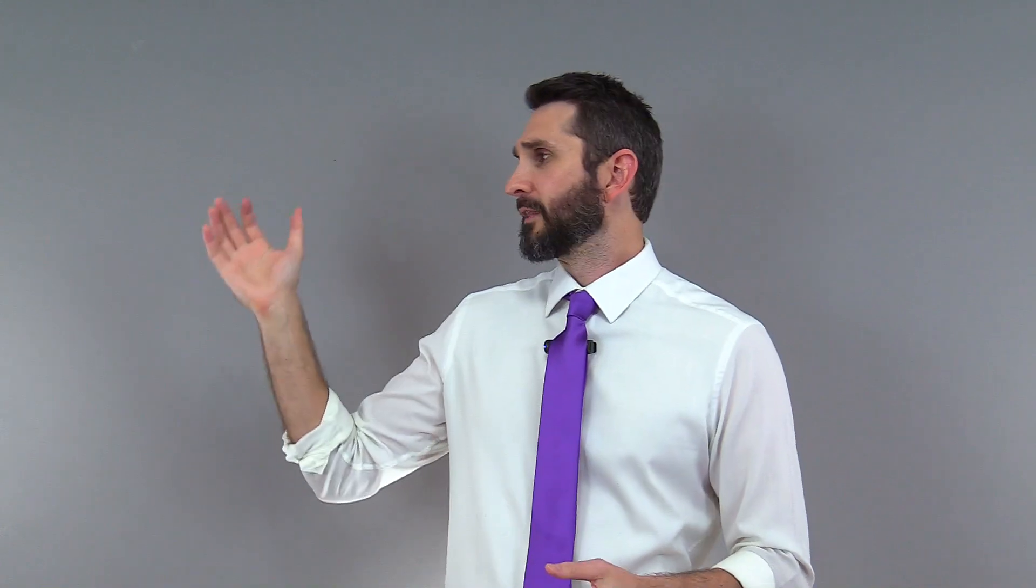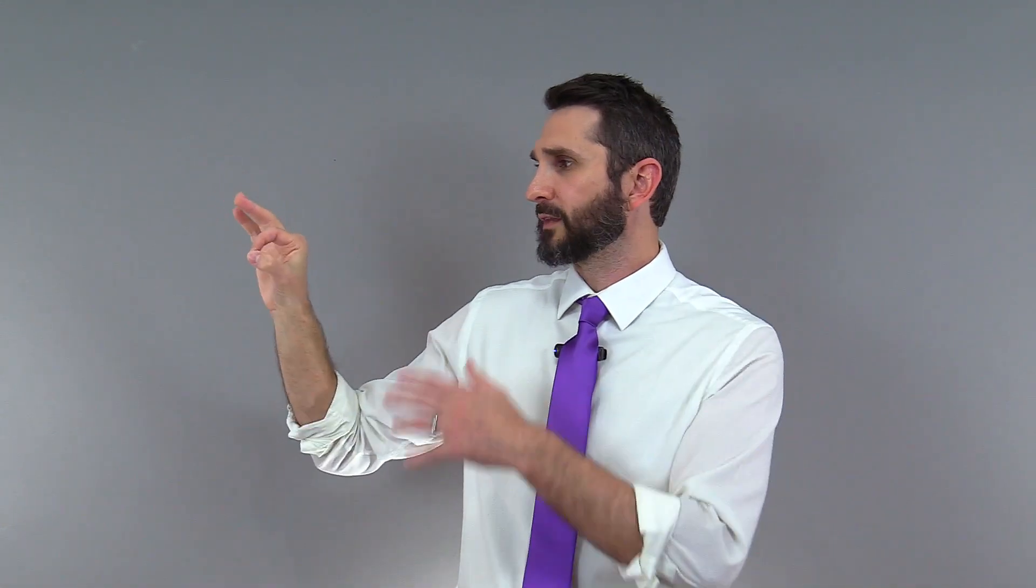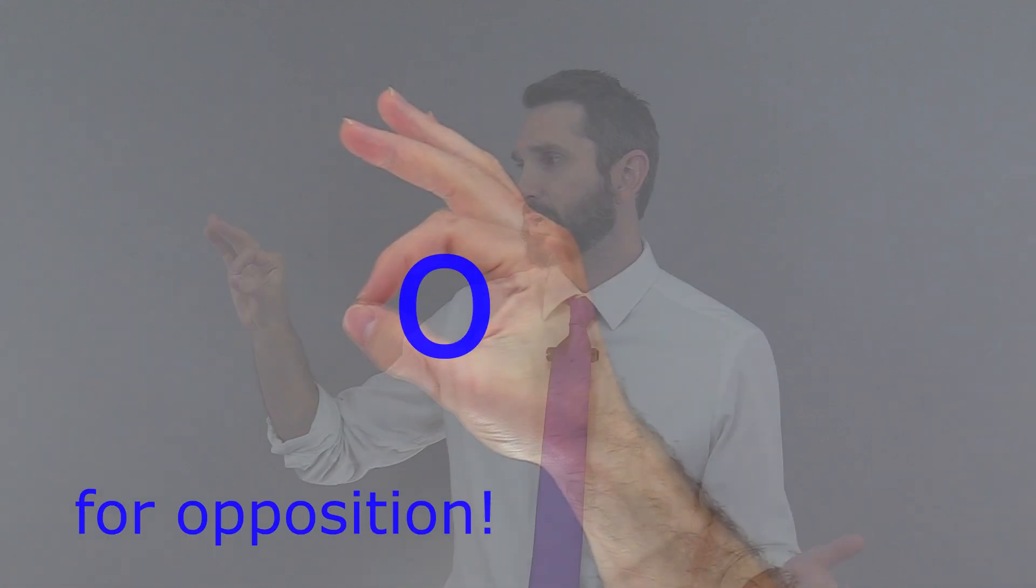Also check this out: whenever opposition occurs, the thumb moves and meets the tip of one of the fingers, and when you look at the shape that results, it kind of makes the shape of a letter O. O for opposition with our opposable thumbs.